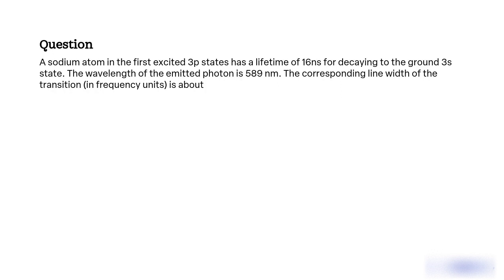What is the line width of the transition from the first excited 3p state to the ground 3s state of a sodium atom with a lifetime of 16 ns and an emitted photon wavelength of 589 nm, with the objective of determining the spectral broadening of the transition?